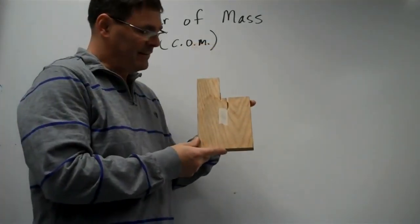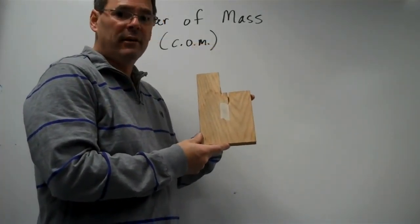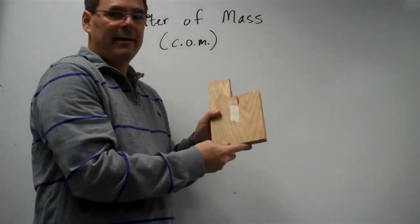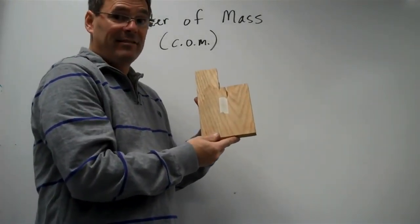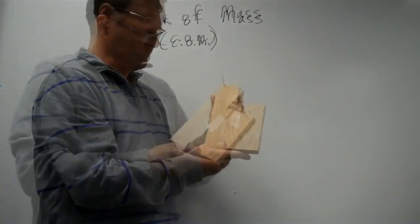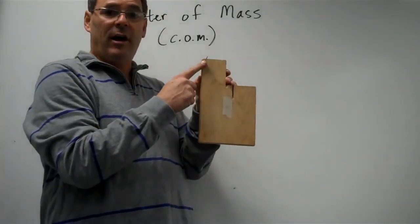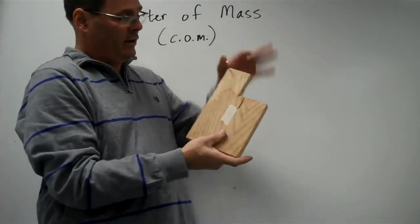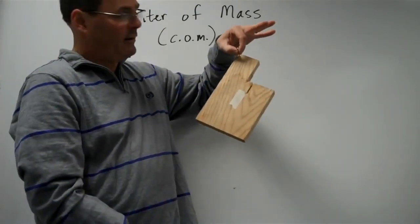The next object that we'll find the center of mass of is an irregularly shaped block. You'll see I've cut a corner out of this one, so it's no longer a nicely shaped rectangle. Now what I've done is I've hammered a nail into it so that I can support the block by the nail.